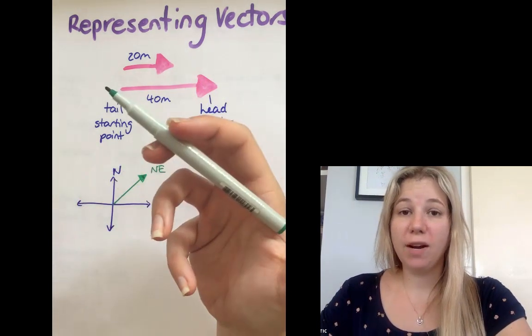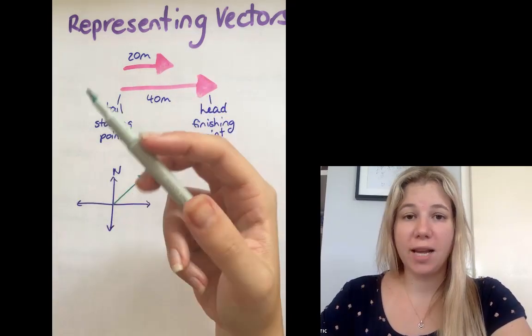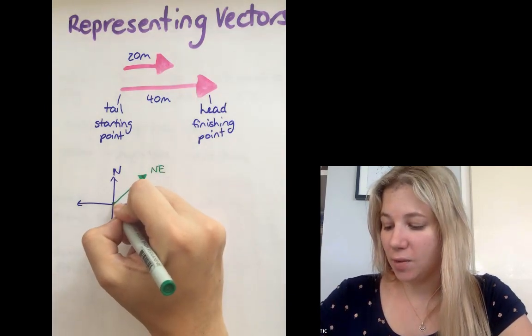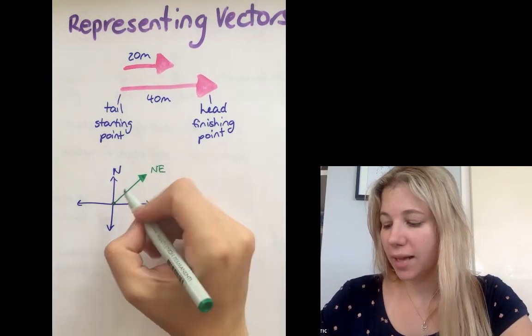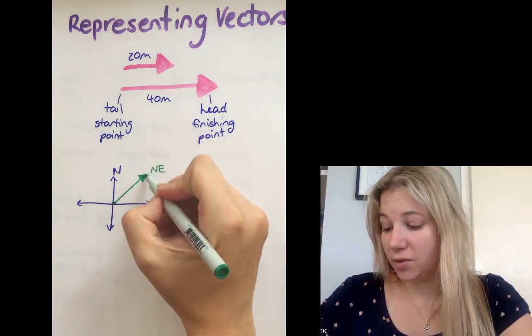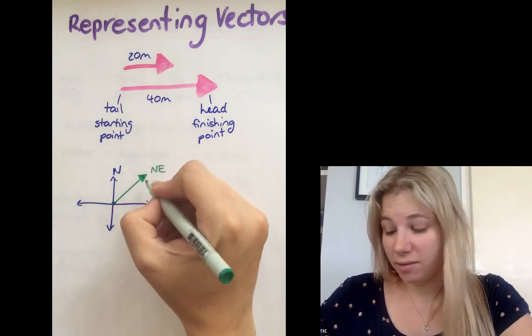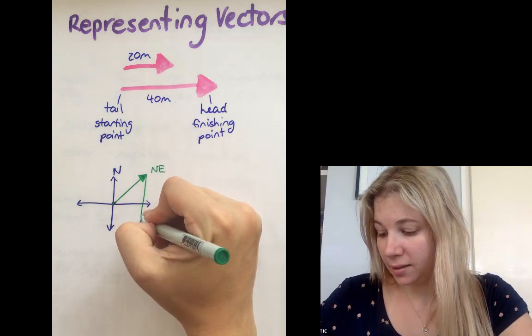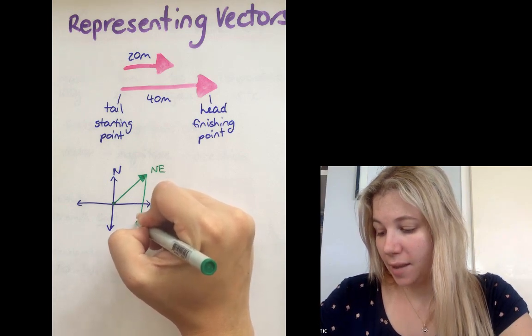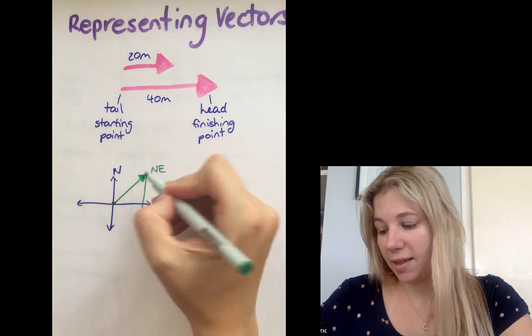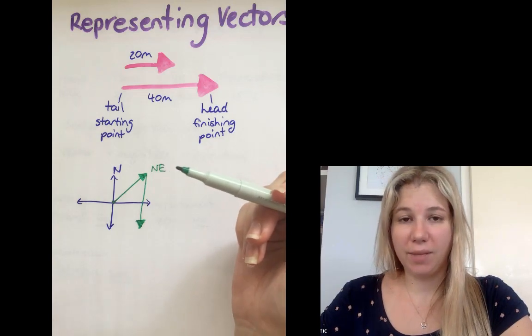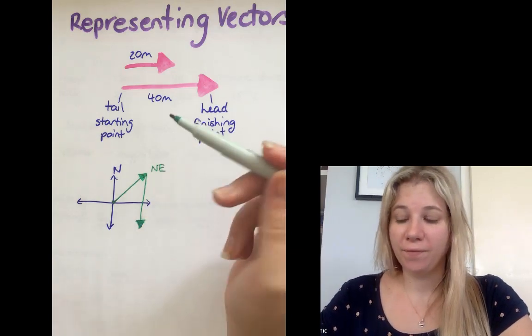We could also have multiple directions in one journey. If you were to drive somewhere, you would take multiple turns and head in different directions. When we represent that, we actually join the heads and the tails. Let's say that here was the starting position and the car traveled northeast for a while, and then it decided to turn and travel south. We would then add our arrow here to indicate that part of the journey that changed direction. The length of the arrow would indicate how far that car traveled in that particular direction before potentially changing again.